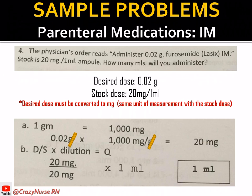Using the formula D over S times dilution equals Q: the desired dose is 20 milligrams divided by the stock dose of 20 milligrams, times 1 ml dilution. Cancel the milligrams; 20 over 20 times 1 equals 1 ml. We need to give 1 ml of furosemide intramuscularly.